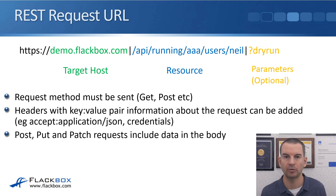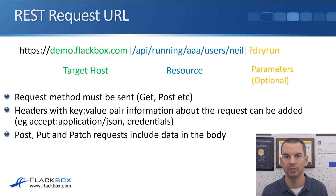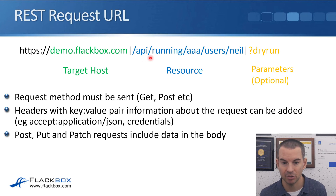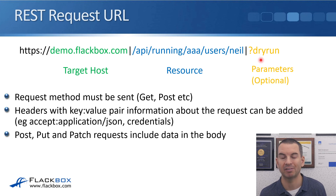Looking at the format of a REST request: since it runs over HTTP or HTTPS, the client gets to the server via a URL. The URL format is HTTP or HTTPS, followed by the target host, and then the resource path on the server — for example, /api/running/aaa/users/nil. Optionally, a query string with parameters can be appended. For instance, a dry-run parameter tells the server to check whether the operation will work without actually making the changes.